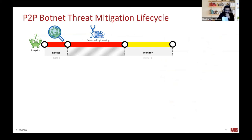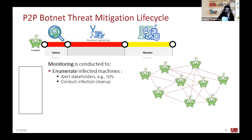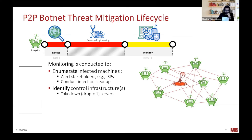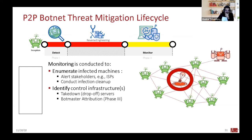Phase two of the threat mitigation lifecycle is monitoring. Monitoring is conducted to enumerate infected machines — to know the IP addresses of machines participating in the botnet. We can alert stakeholders, inform ISPs, and tell network administrators which IPs are participating in the botnet. In the best case, we can identify control infrastructures to take down dropper servers if they exist, or perform bot master attribution to identify who is controlling the botnet.